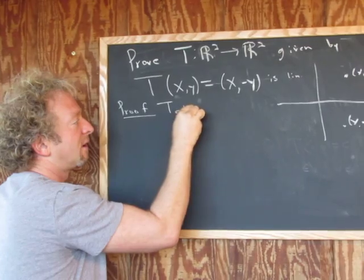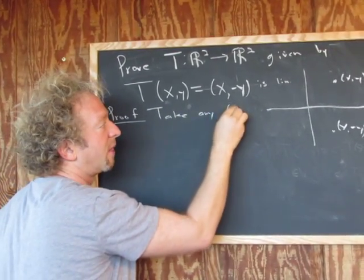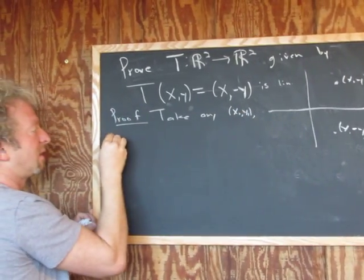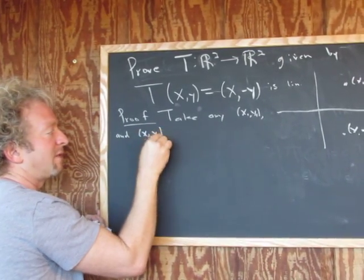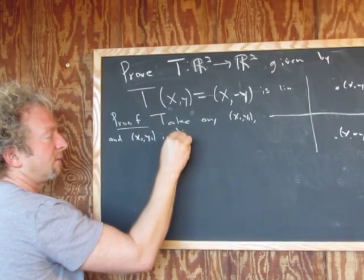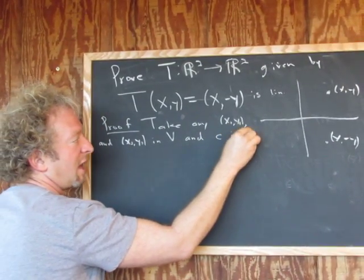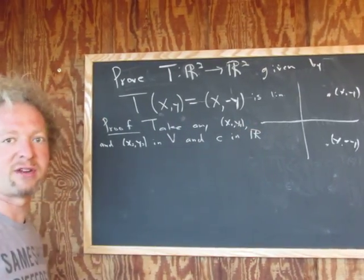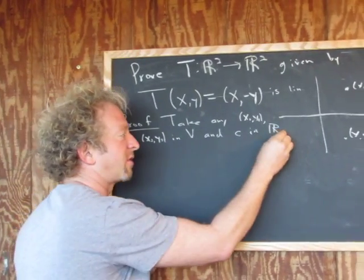So it's a little bit more work. So take any X1, Y1, and X2, Y2 in V, and C in F. So F here is the set of real numbers. I'll just say the set of real numbers, because our overlying field is the set of real numbers. Okay, so those are our two vectors.